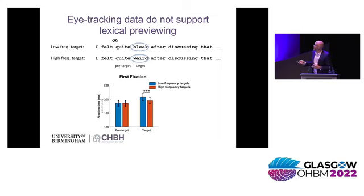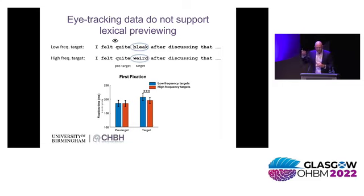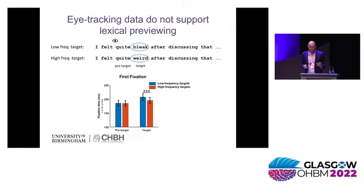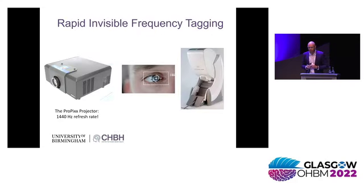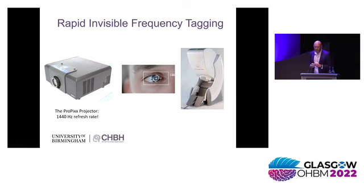We now have evidence that there actually is previewing at the lexical level, and we have been able to obtain this with MEG using a technique we call rapid invisible frequency tagging. What we have been doing is developing a new tool to use together with MEG, based on using a ProPix projector with a refresh rate of 1440 Hz. This means we can drive the frequency of each individual pixel on the screen at whatever frequency we want. We present visual stimuli and flicker some of these stimuli at high frequency above 50 Hz. At the same time, we use an eye tracker to measure eye position and MEG to measure brain activity.